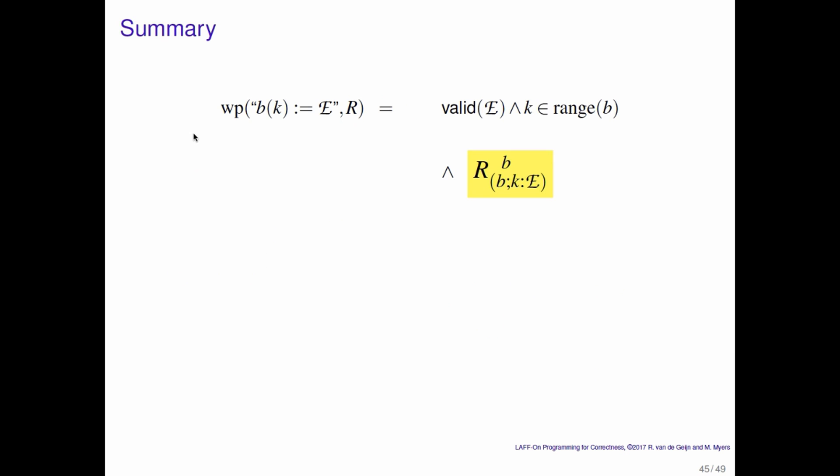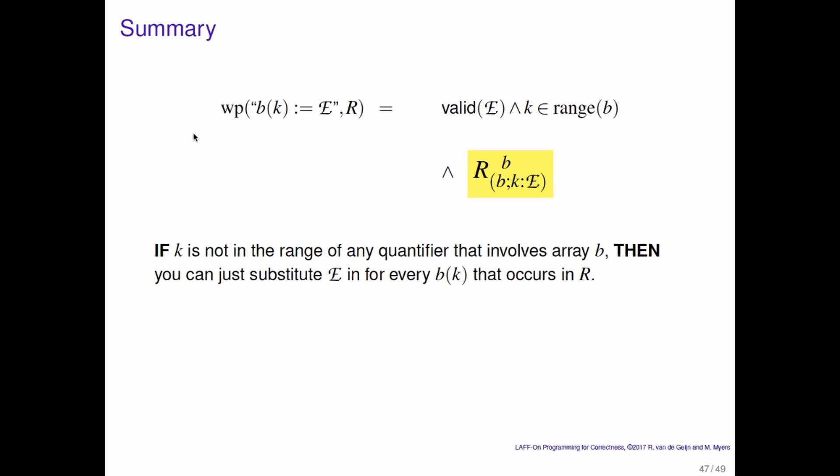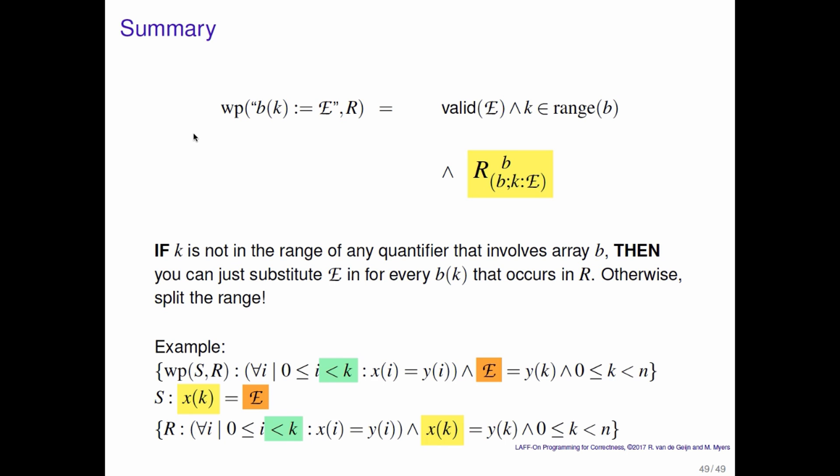In summary, this is the weakest precondition when you're assigning to an element of b. If b[k] is not in the range of any quantifier that involves array b, you can instead simply substitute the expression e for every free occurrence of b[k] in the predicate r. Otherwise you may want to split the range so that you are in that position. An example: here we have a postcondition where we have isolated the element of x indexed by k — that is the element to which we assign an expression — and notice that we just did a textual substitution of that expression into the occurrence of x[k] to come up with the weakest precondition.